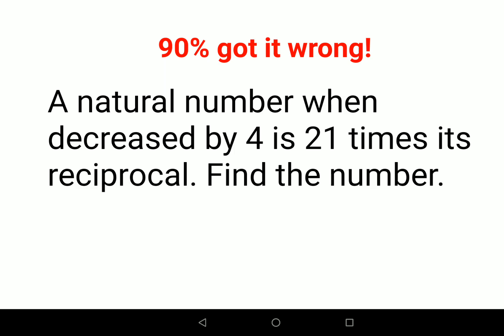Let the natural number be x. So x when decreased by 4, 'decreased' means subtraction, 'is' means equal to, 21 times its reciprocal which is 1 upon x. So eventually this entire equation changes to x minus 4 equals 21 upon x.